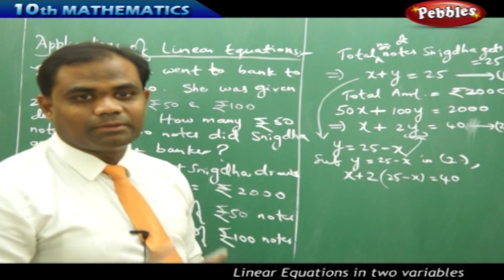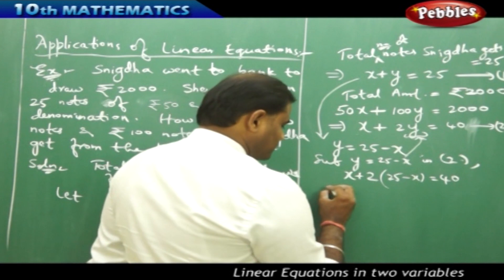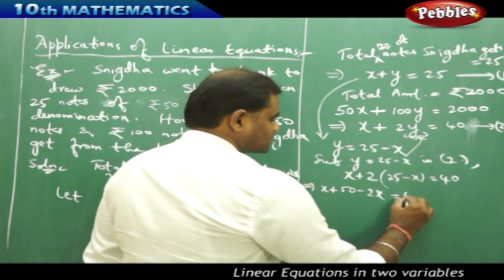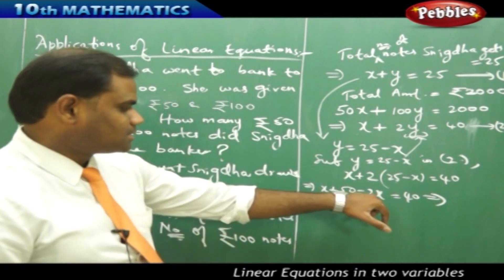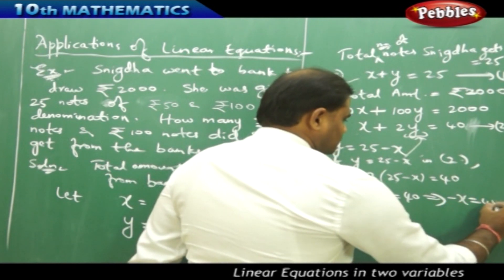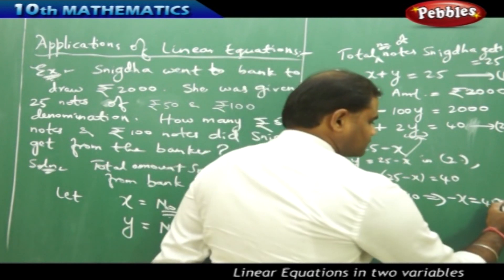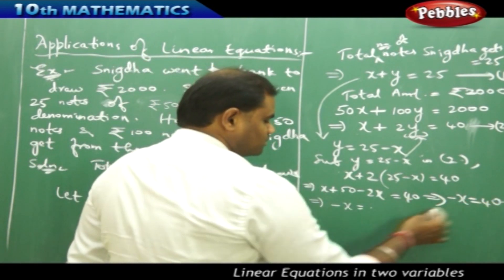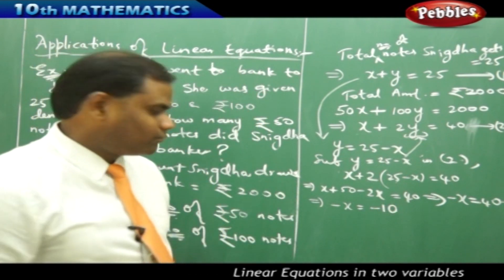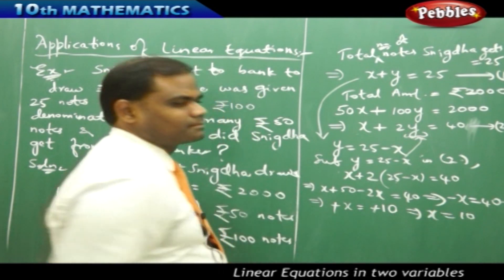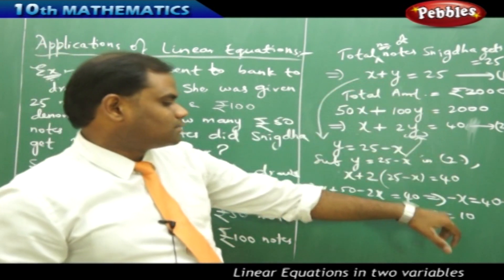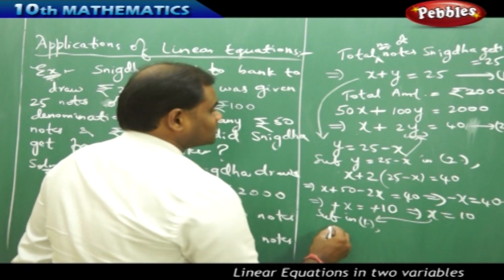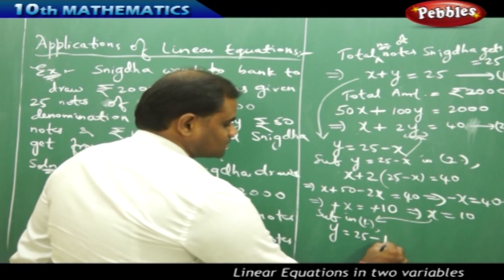This reduces to a linear equation in one variable X. Expanding: X plus 50 minus 2X equals 40, which simplifies to negative X plus 50 equals 40, giving negative X equals negative 10. Cancelling the negatives on both sides, X equals 10. Substituting back into Y equals 25 minus X gives Y equals 25 minus 10, which is 15.